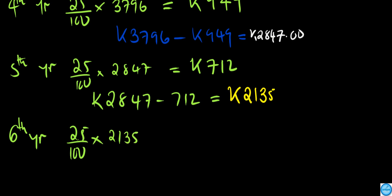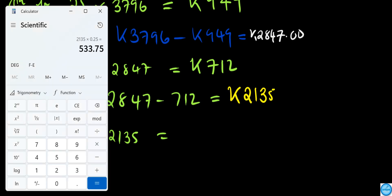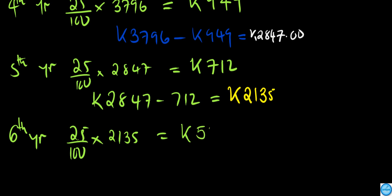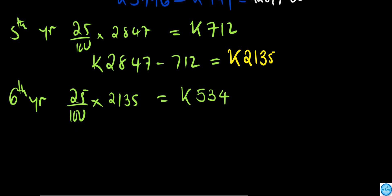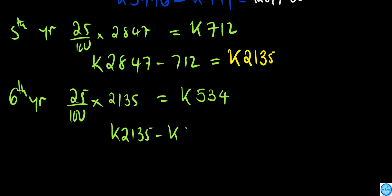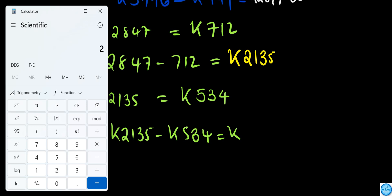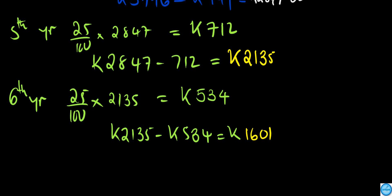In year six, we need to find 25% of 2,135. Multiplying 2,135 by 0.25 gives 533.75, which rounded to the nearest whole number is 534. That is the depreciation in year six. So the book value at end of year six is 2,135 minus 534, which equals 1,601.